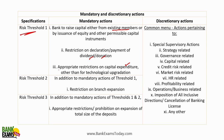In Risk Threshold 2, in addition to the mandatory actions in Risk Threshold 1, there is a restriction on branch expansion - new branches cannot be opened.